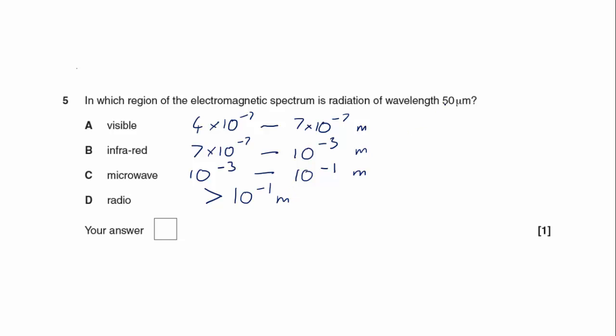OK, so 50 micrometres, that's 50 times 10 to the minus 6. So put it to standard form, that gives me 5 times 10 to the minus 5 metres. So that corresponds to infrared. So our answer is B.